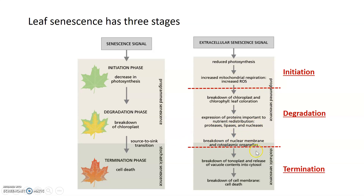That breakdown of organelles and the nuclear membrane is what shifts the leaves from programmed senescence in the degradation phase into stochastic senescence. Once the breakdown of the vacuole starts and contents of that storage organelle begin spilling into the cytosol, random or stochastic senescence starts. You're not sure at what rate that happens or how harmful it is to the cell, but it is harmful and will ultimately lead to the breakdown of the plasma membrane, cell death, and termination.